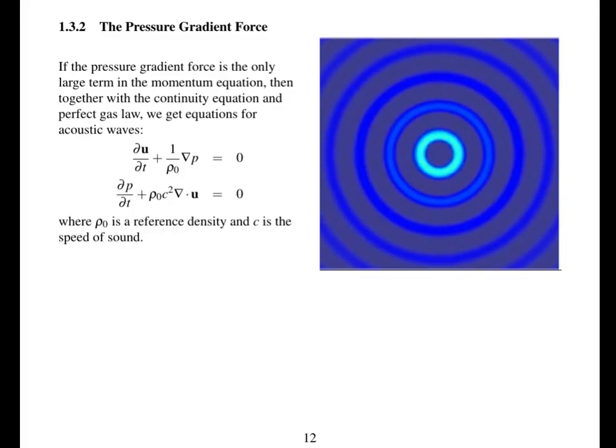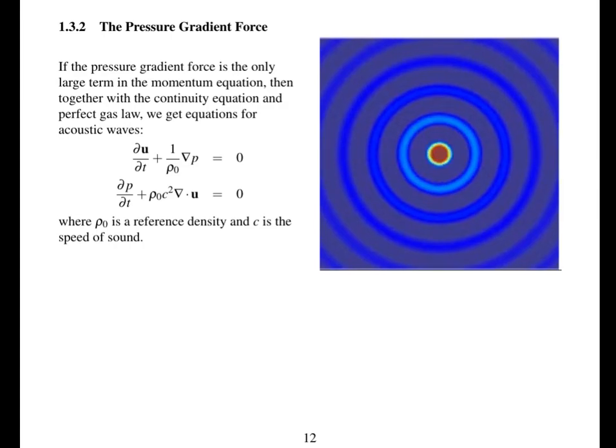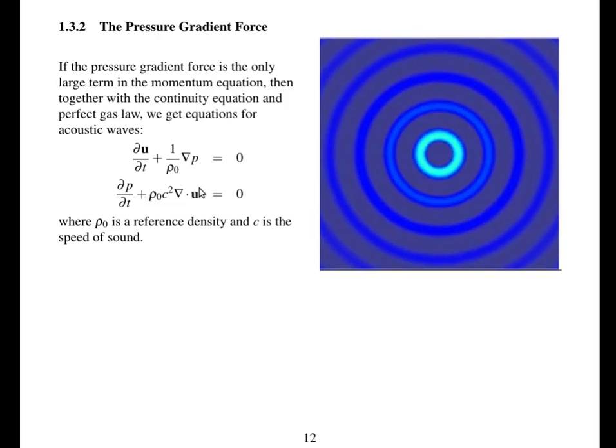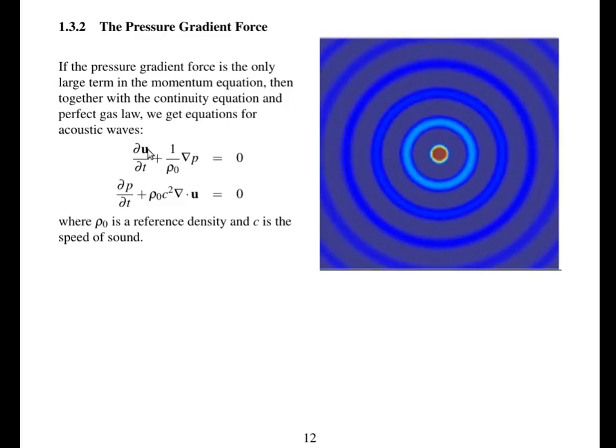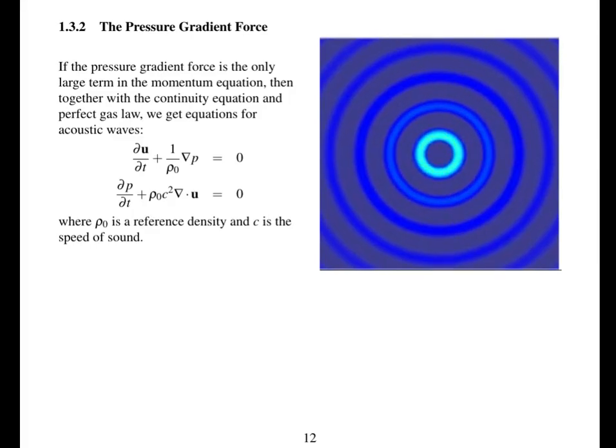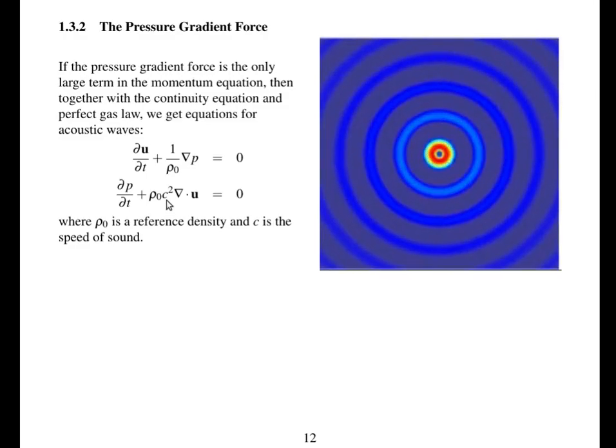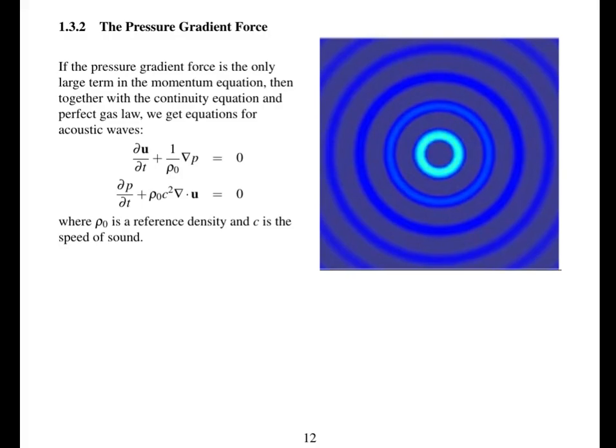Next, we'll look at the influence of the pressure gradient force. If the pressure gradient force is the only large term in the momentum equation, then we can simplify the momentum equation and the continuity equation. And we'll get equations for acoustic waves, which are these equations. So what's happening here? So you get a pressure gradient. And that pressure gradient is going to accelerate the velocity, accelerate the fluid. When the fluid is accelerated, it's no longer divergent free. So then in this version of the continuity equation, you get a change in pressure because you've got this divergence. This divergence is multiplied by the speed of sound squared.